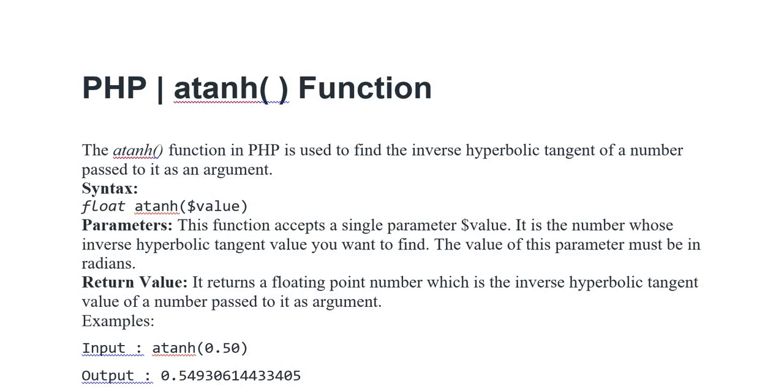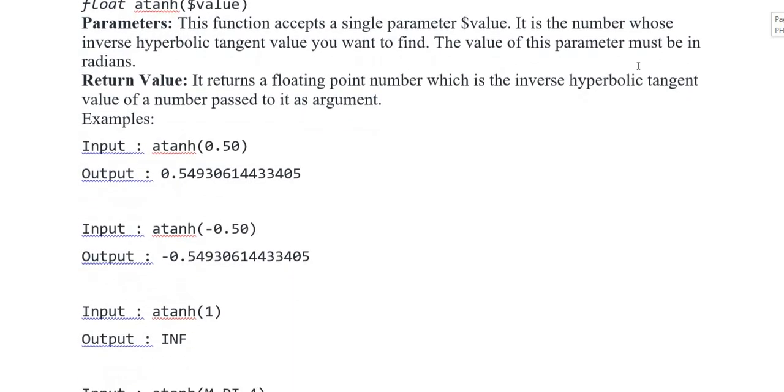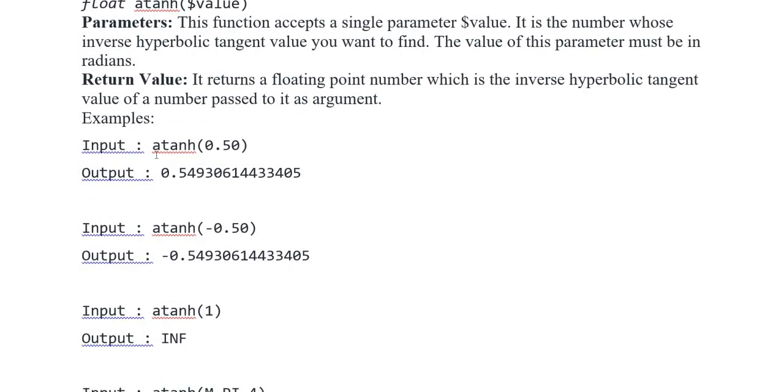Return value: It returns a floating point number which is the inverse hyperbolic tangent value of the number passed. Examples: Input atanh(0.50), output 0.5493061443405 is represented in the output form.